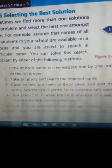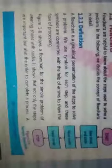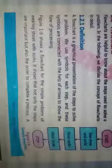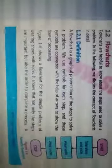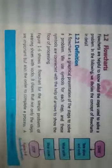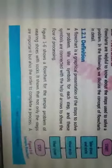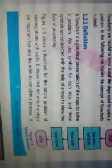When you type the name using the Ctrl+F command, that name will be highlighted on the page. After that, our next topic is the flowchart. A flowchart is a graphical representation of steps to solve a problem. We use symbols for each step, and these symbols are connected with the help of arrows to show the flow of processing.